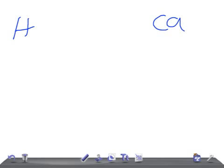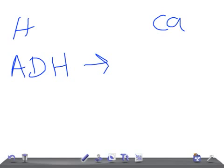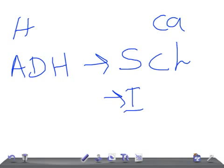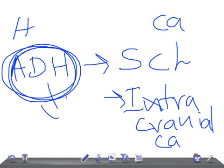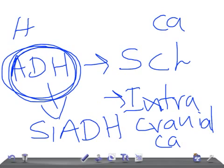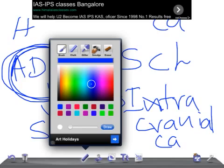Next: ADH — anti-diuretic hormone. You see elevated ADH in small cell carcinoma of the lung and in intracranial cancers — cancers within the cranial cavity. Because of this elevated ADH, the patient will develop a condition known as SIADH. I've explained SIADH in detail in my previous video — just search SIADH by All or None Law to find it.